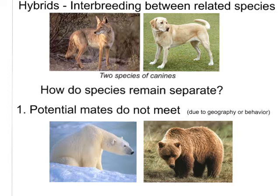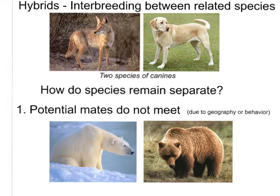One more concept to think about: hybrids. Most of you are familiar with that term, simply meaning a cross or a mix of two things. When we're talking about hybrids in biology, we're talking about interbreeding between related species. So here are two different species of canines — a coyote and a dog. They rarely breed and produce offspring simply because they often do not meet. But when they do, we get something called a coy dog. The reason coy dogs have not become their own species largely is because it would be very rare for one coy dog to meet another coy dog and produce offspring.